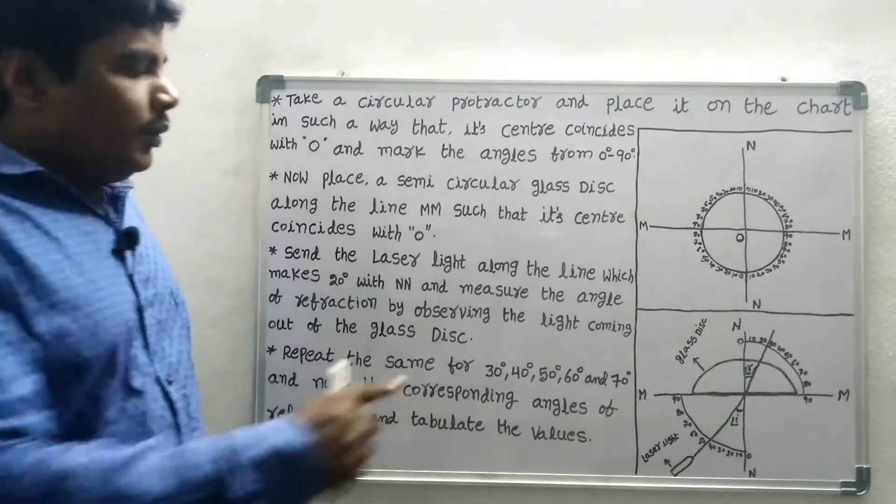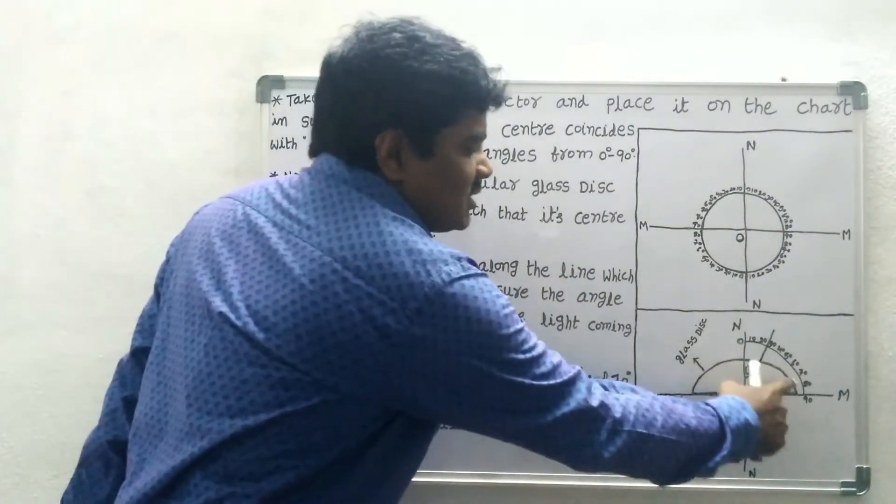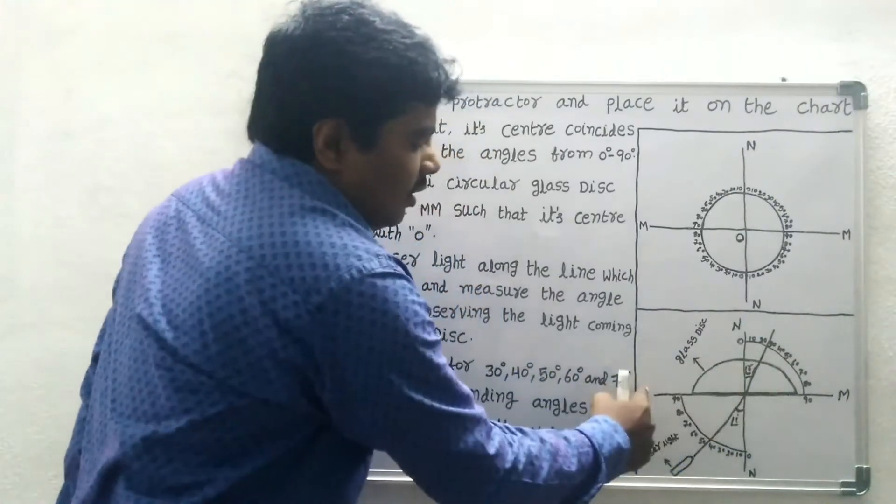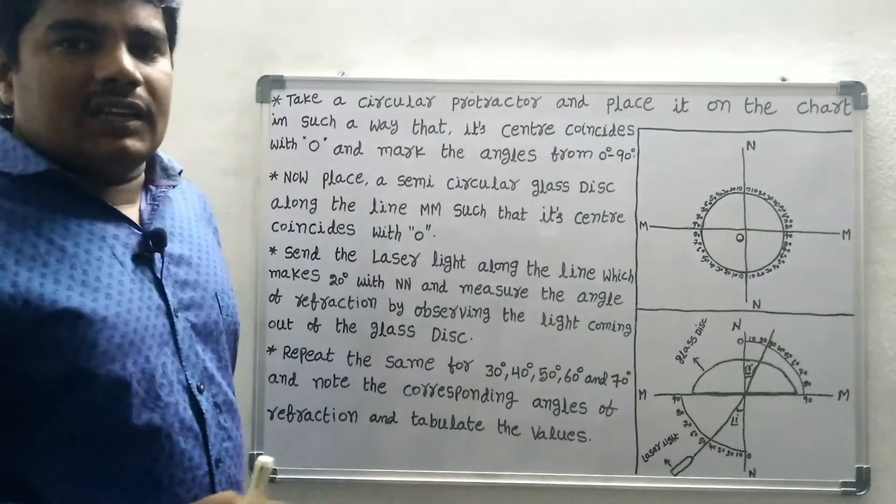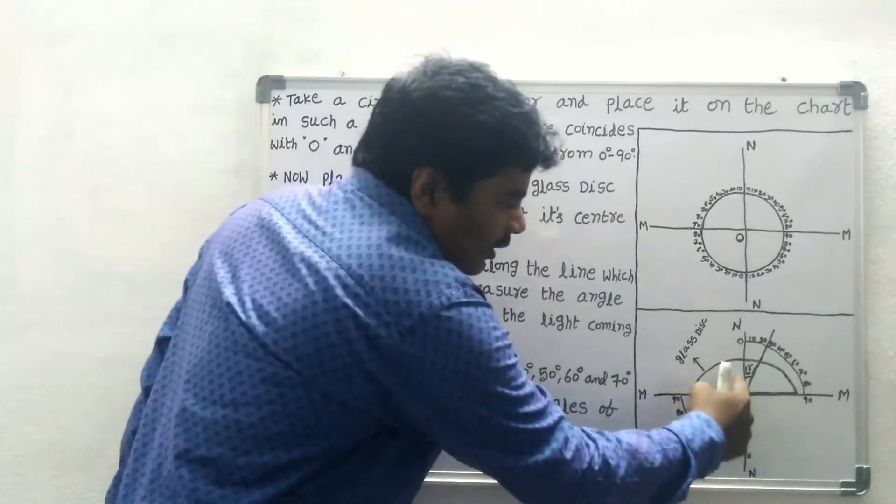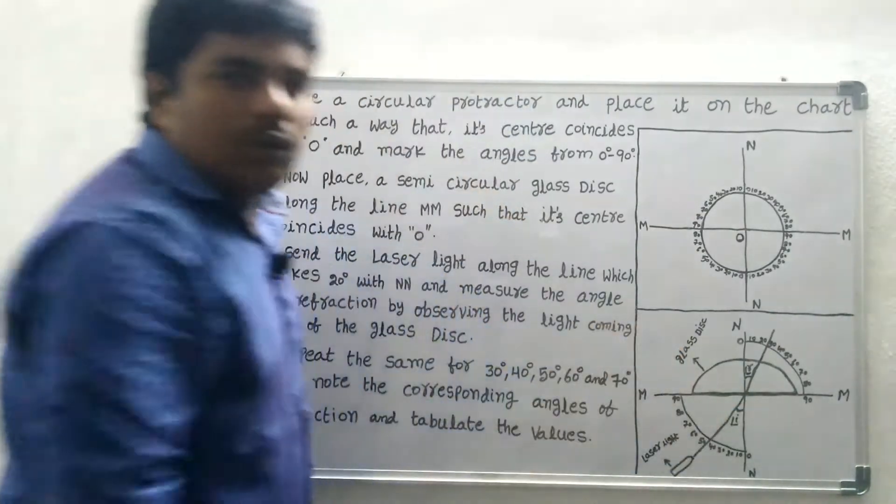Now place a semicircular glass disk along the line MM such that its center coincides with O.